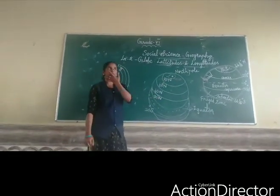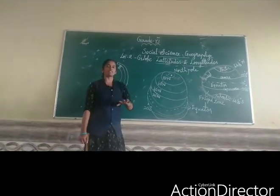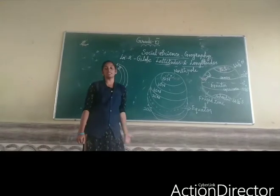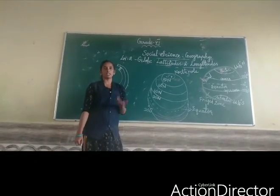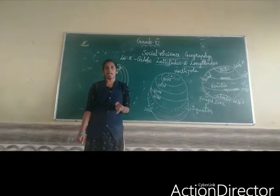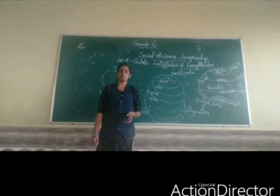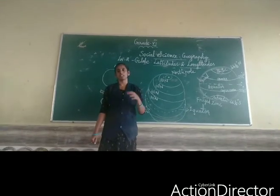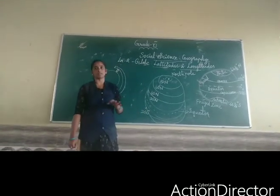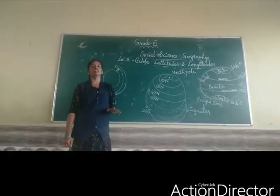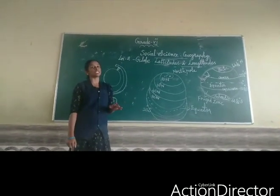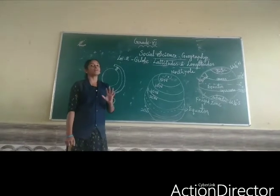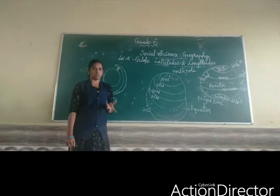I hope you have understood from the previous chapter 1, where we discussed about planets and what is meant by solar system, what are the things in the solar system. Now we are going to see about our earth.